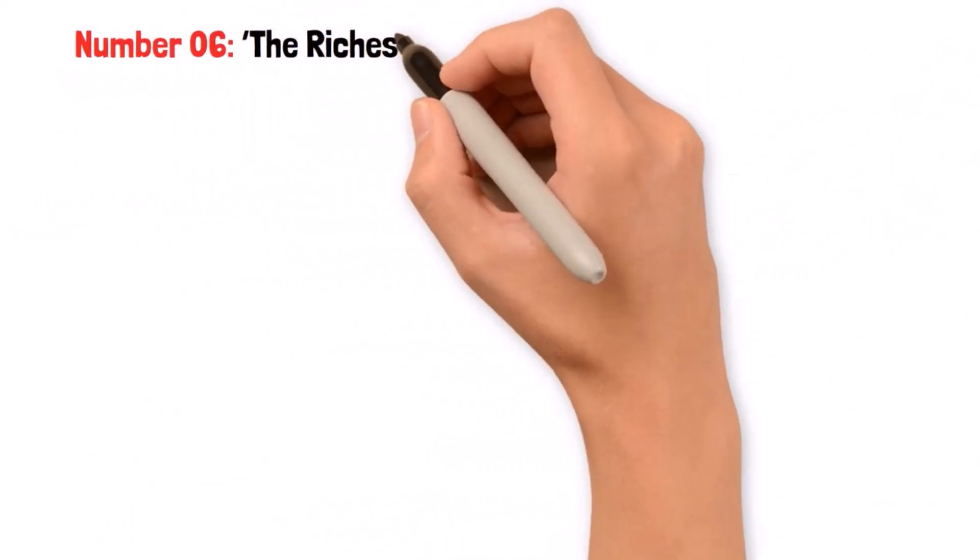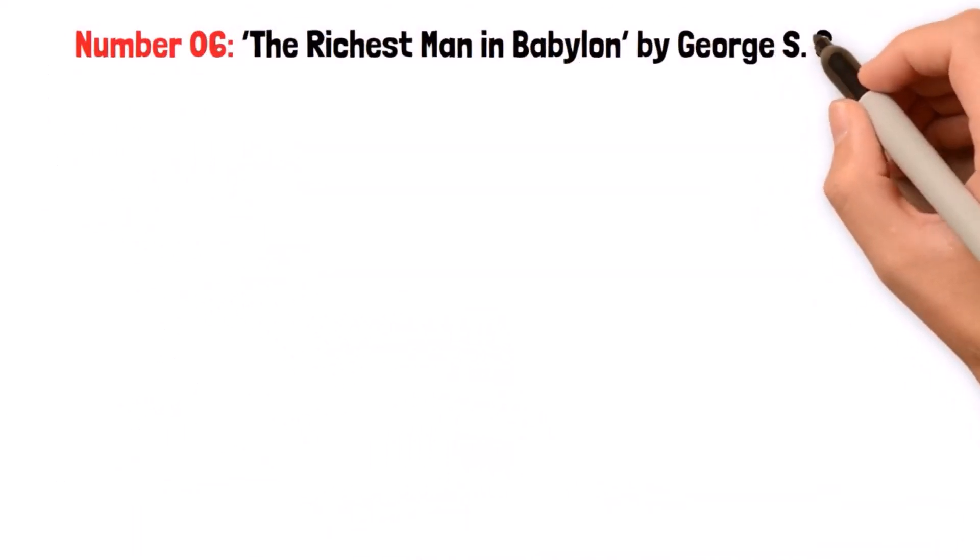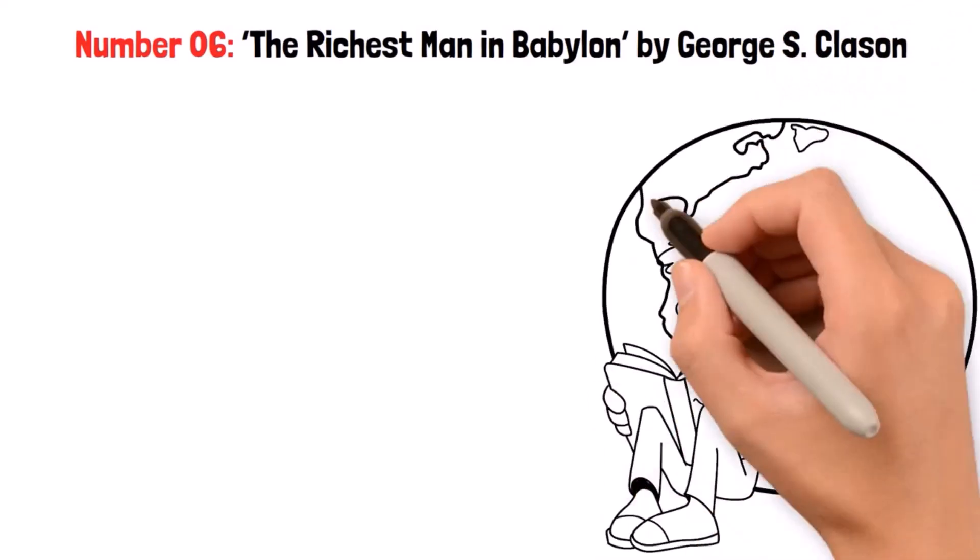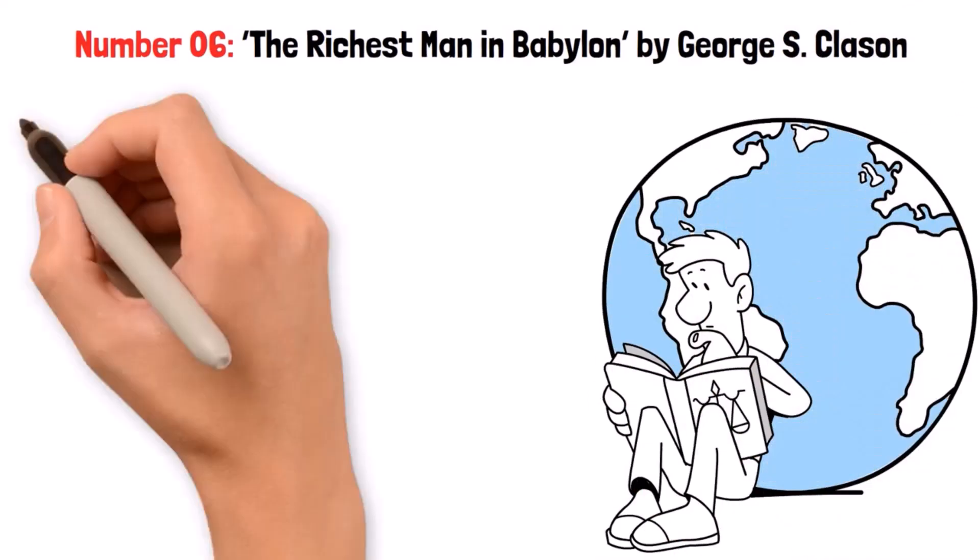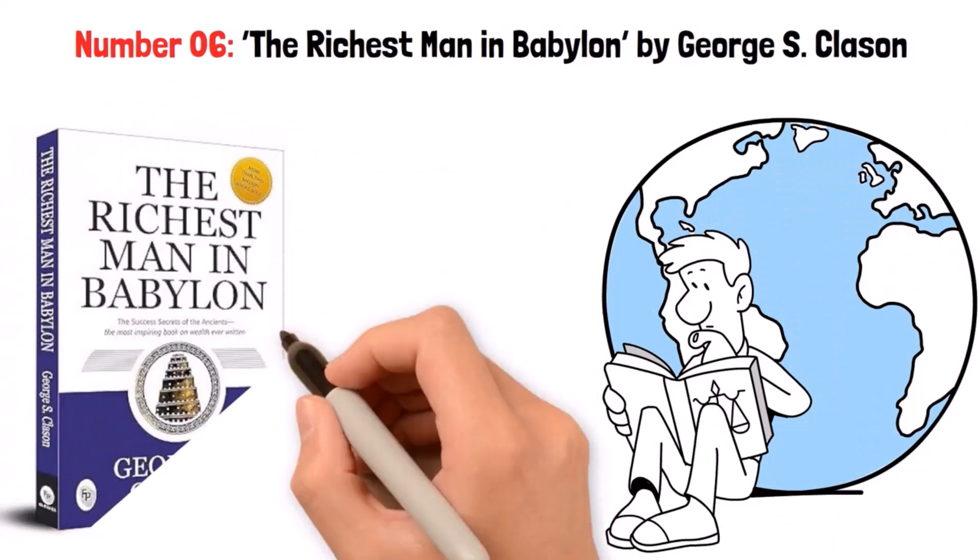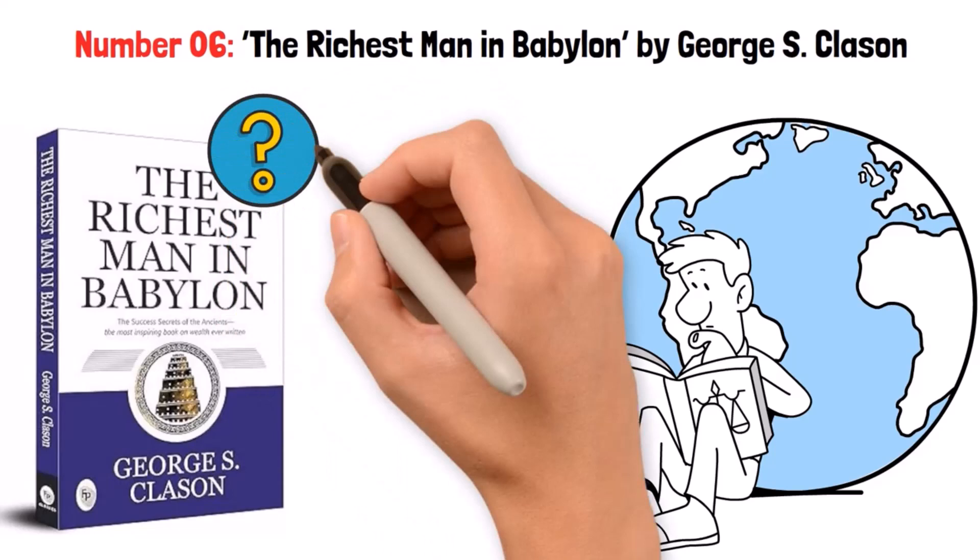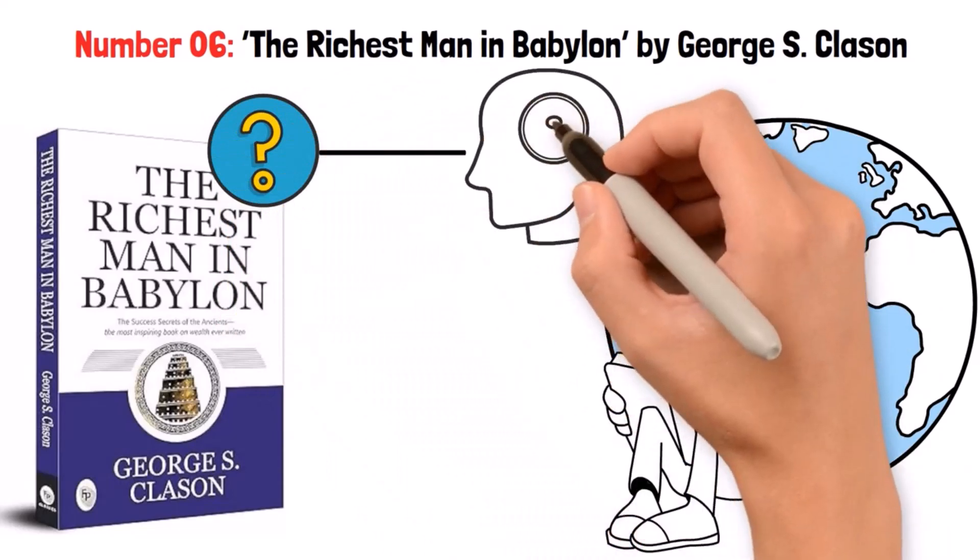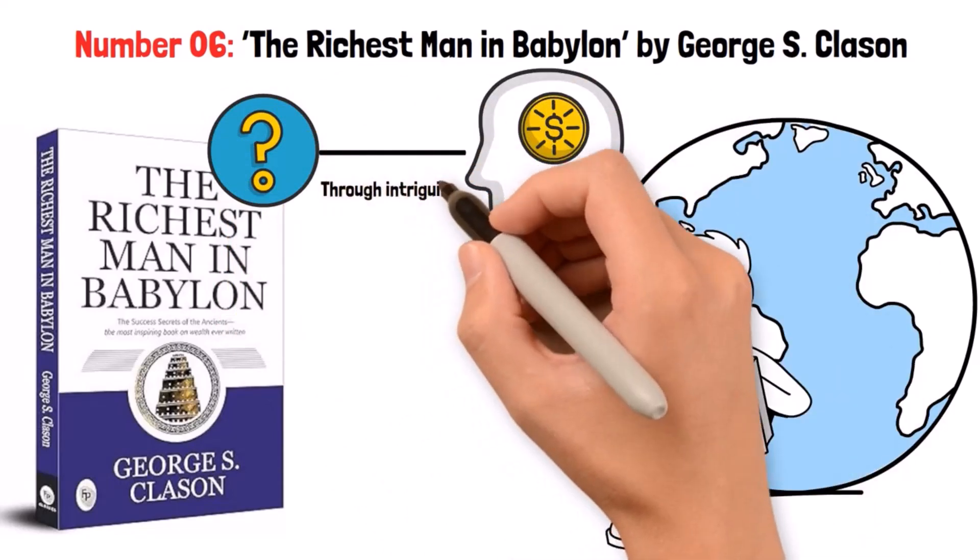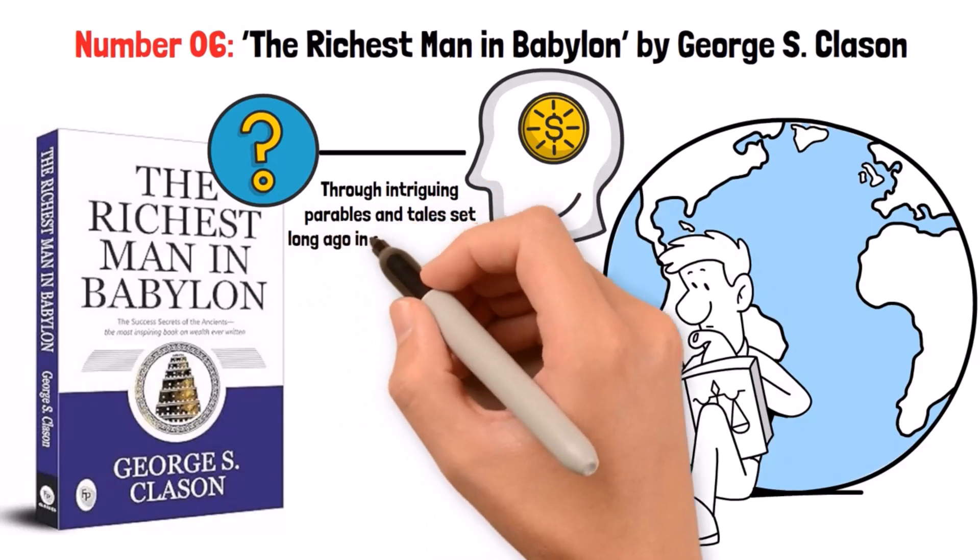Number 6: The Richest Man in Babylon by George S. Clason. Next up is arguably one of the most iconic personal finance books ever written. What makes this book so special is that George presents financial wisdom through intriguing parables and tales set long ago in ancient Babylon.